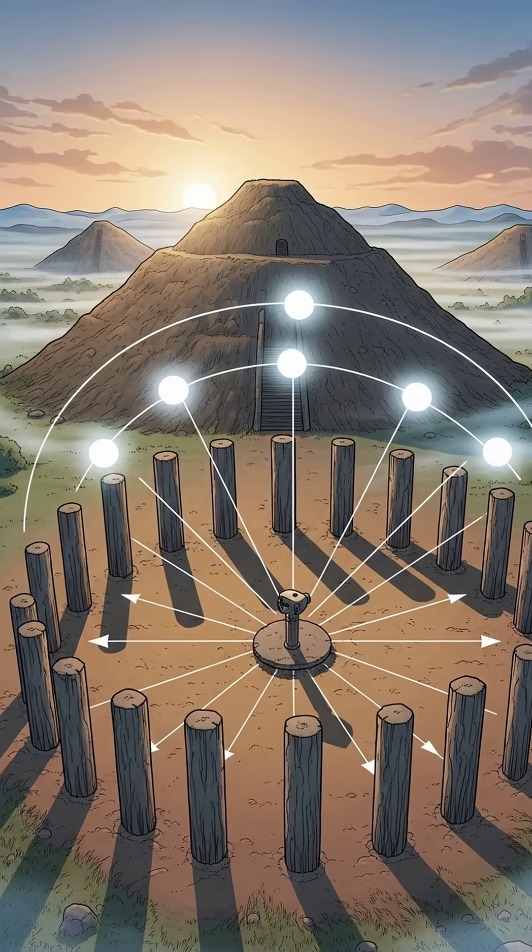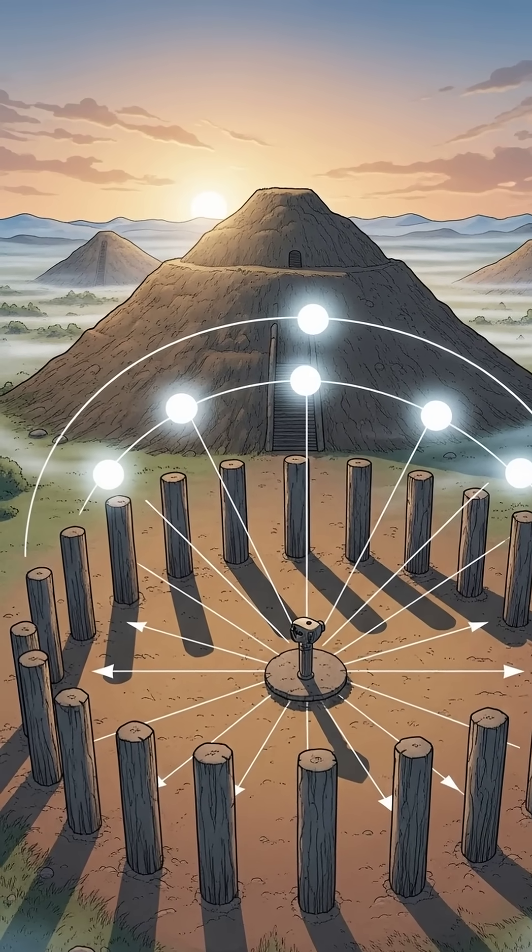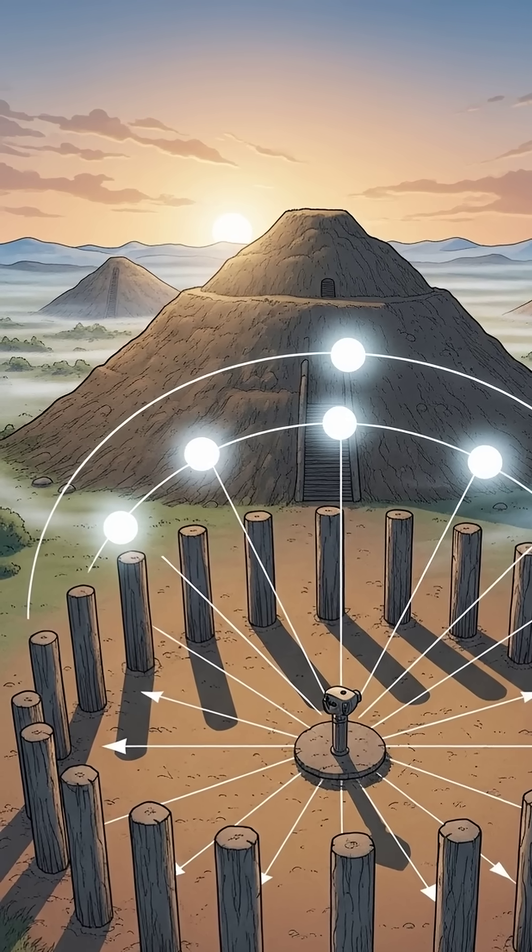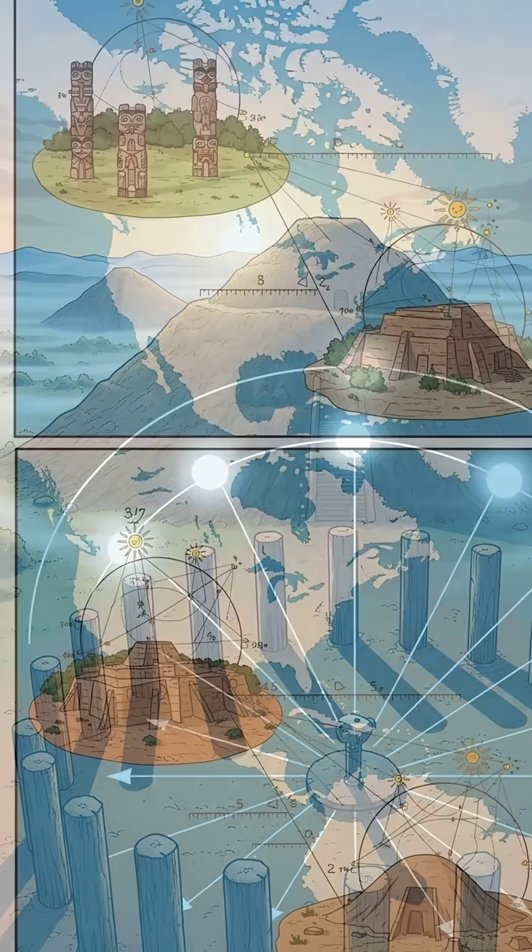Then there is Cahokia. Its mounds were arranged around a solar calendar now called Woodhenge. Posts marked equinoxes and solstices with repeatable accuracy across years.